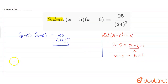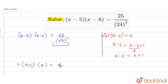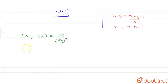So x minus 5 is k plus 1, and x minus 6 is k, giving us k plus 1 into k is equal to 25 upon 24 square. Now the equation is a simple quadratic equation.